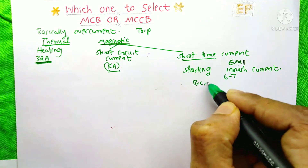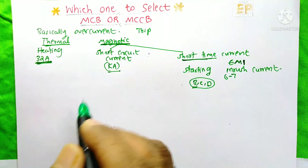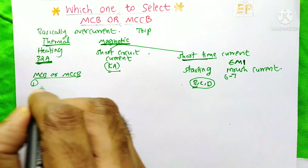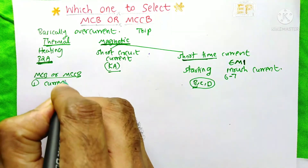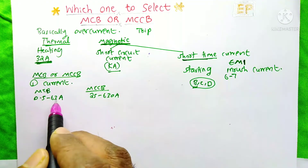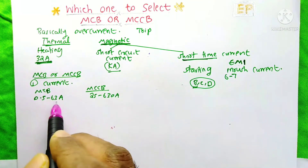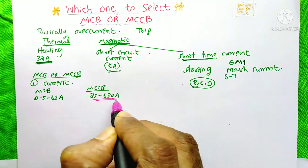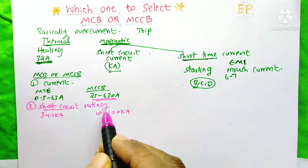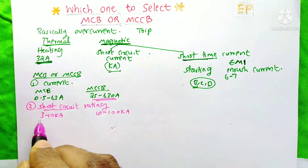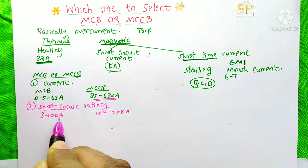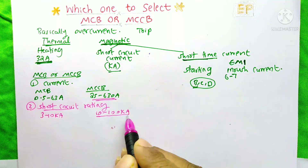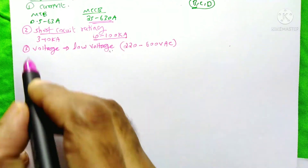For selecting MCB or MCCB for our application, the first factor to consider is the current range. The MCB is available from 0.5 to 63 amperes, while the MCCB is available from 25 to 630 amperes. The second factor is the short circuit rating: the MCB is available from 3 to 10 kilo-amperes, but the MCCB covers a higher range of 10 to 100 kilo-amperes.